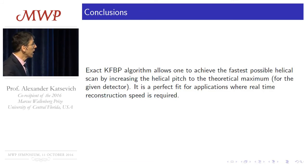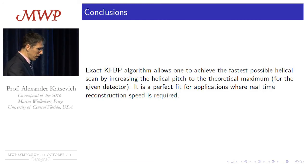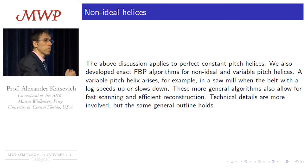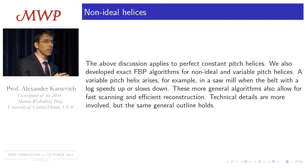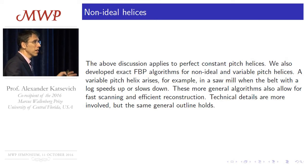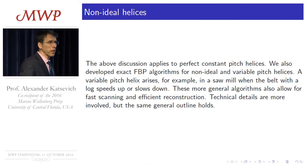In real world there are non-ideal helices. What I showed before applies to constant-pitch ideal helices. In real life, the belt speeds up and slows down, so you get non-ideal helices. We developed exact FBP algorithms for such helices, and these more general algorithms also allow fast scanning and efficient reconstruction. The technical details are more involved but the main idea is pretty much the same.